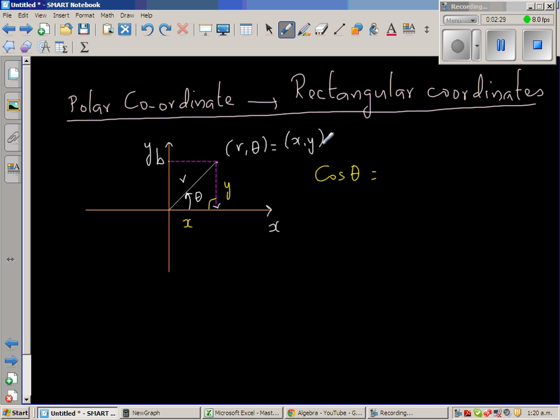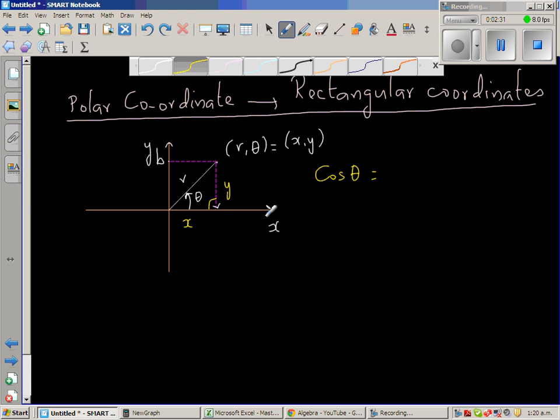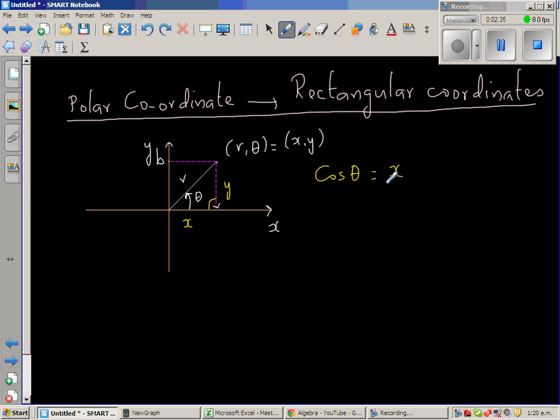So here, can I say cos θ is adjacent over hypotenuse, which is x over r. Which implies, what is x? x is r cos θ.